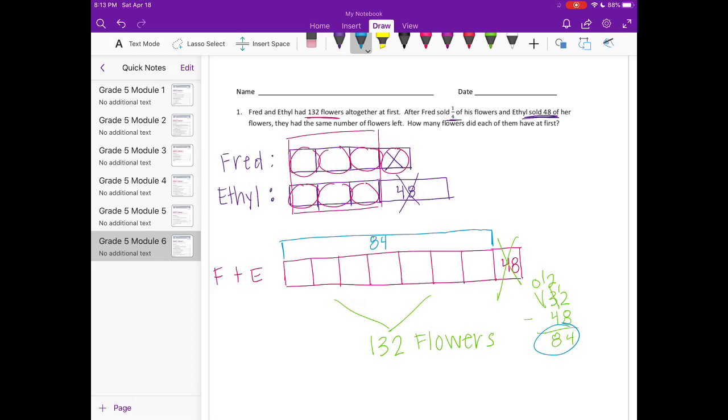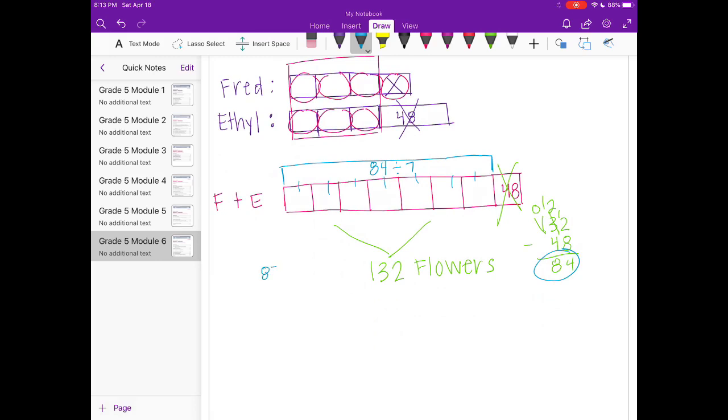So I'm left with 84. That means 84 is represented in this portion right here. So I need to take that 84 and divide it equally among, let's see, one, two, three, four, five, six, seven pieces. Let's do 84 divided by seven.